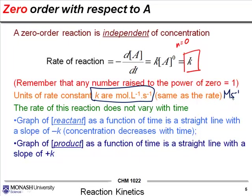So the rate of this reaction doesn't vary with time, so the graph of a reactant as a function of time would be a straight line. If this is time and this is the concentration, as time goes on it is just a straight line, it doesn't change.